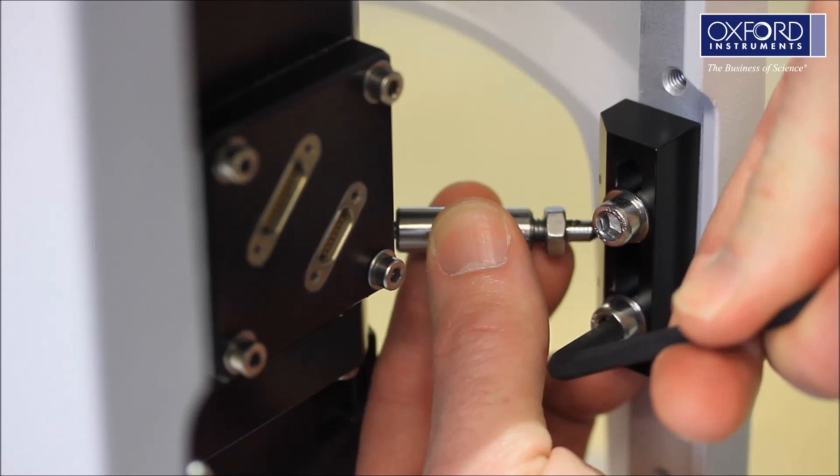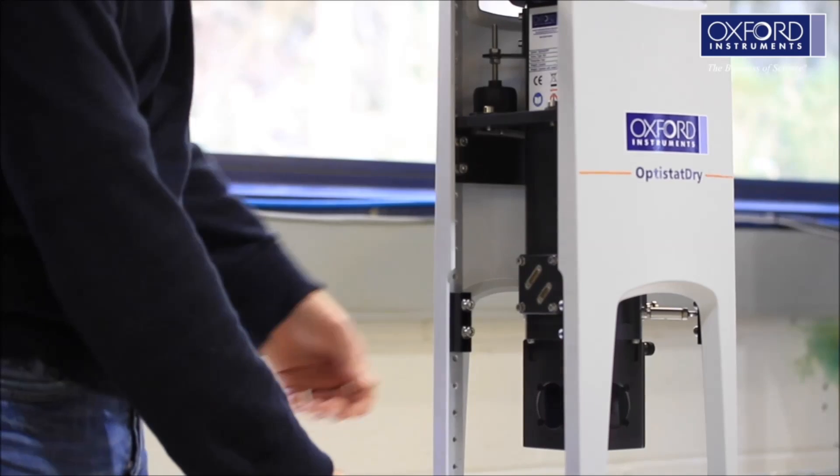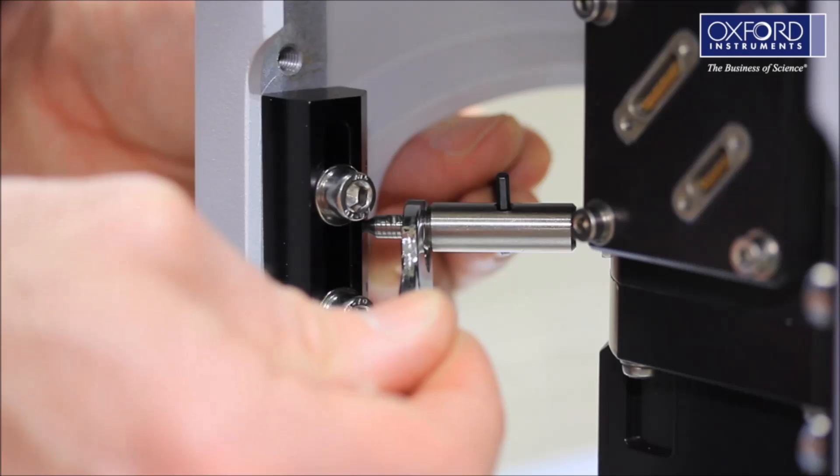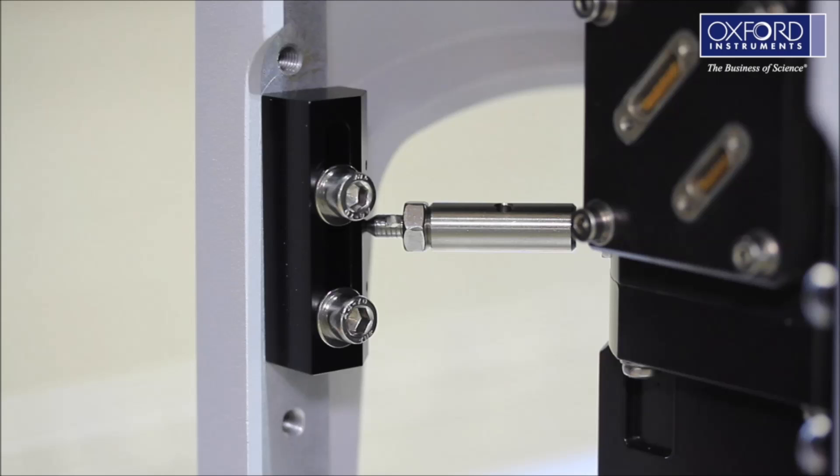Repeat this operation for all four radial restraints. When all four are in position, fix the final length of the radial restraints. Do not overextend them. The elastomer in each constraint should be only slightly compressed.